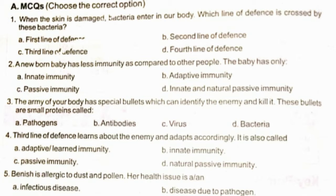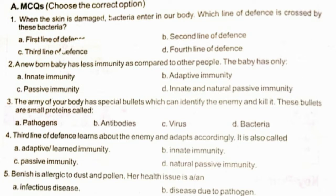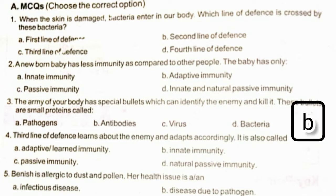A newborn baby has less immunity compared to other people. The baby has only Option C: passive immunity. The army of your body has special bullets that can identify the enemy and kill it. These bullets are small proteins called antibodies.